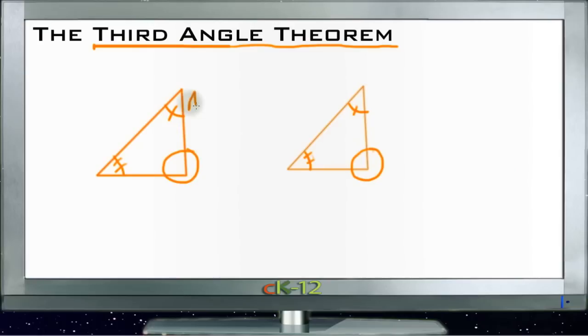That's because if we call this angle A and angle B, and call this one angle C and this one angle D, we know that A plus B plus the missing one down here, we'll call it X, equals 180.